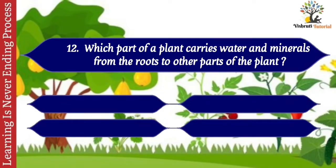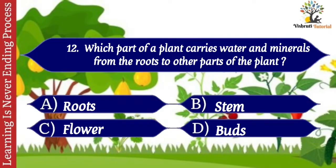Question number twelve: which part of a plant carries water and minerals from the roots to other parts of the plant? Options: A. Roots, B. Stem, C. Flower, D. Buds.